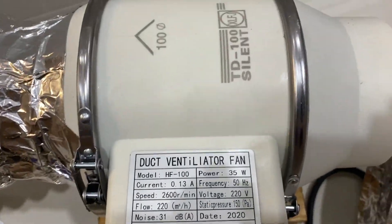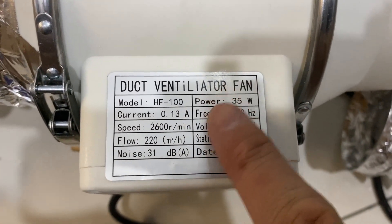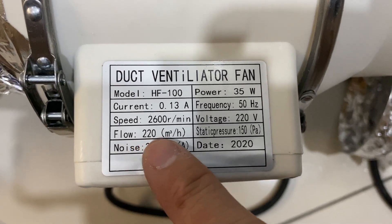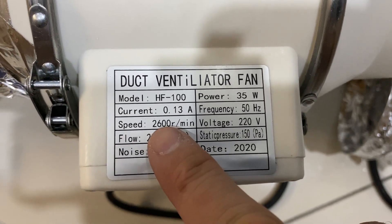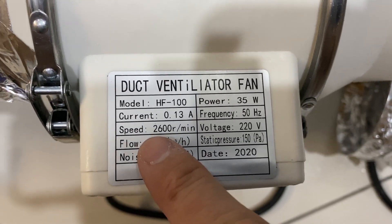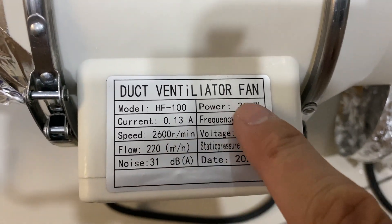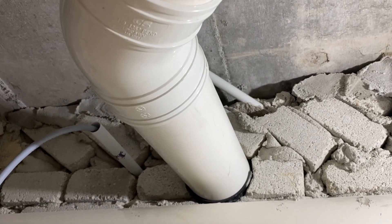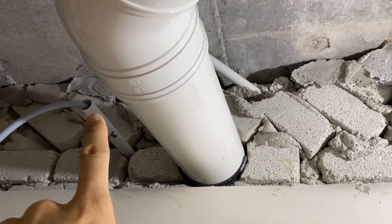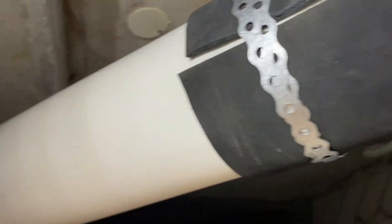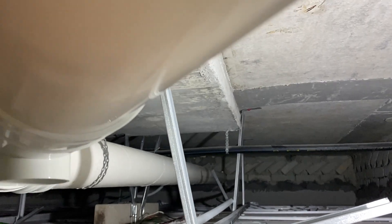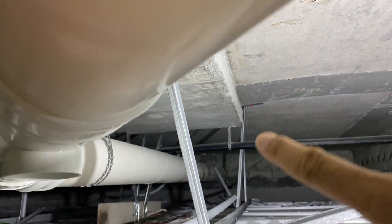So I have a duct ventilation fan, static pressure 150 pascal, flow is 220 cubic meters per hour, rotational speed is 2600 RPM, power of 35 watts. So this is how it looks like. Four inch tubing, this is for the air and this is for the control wire to turn on the axle fan at the back, all the way back towards the second room and I'll show you the other room.